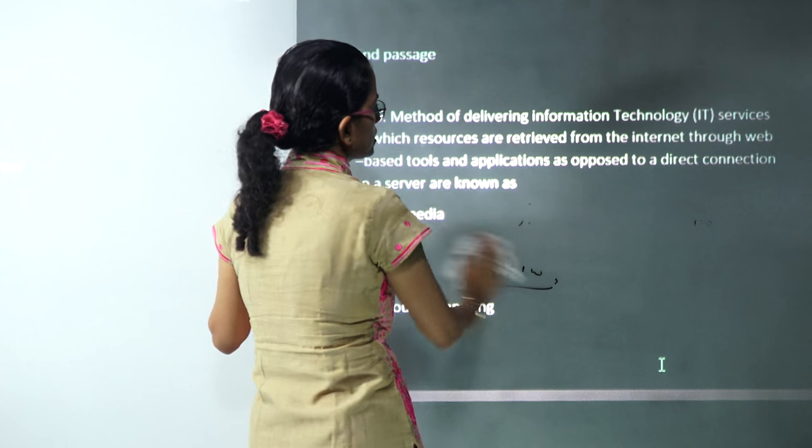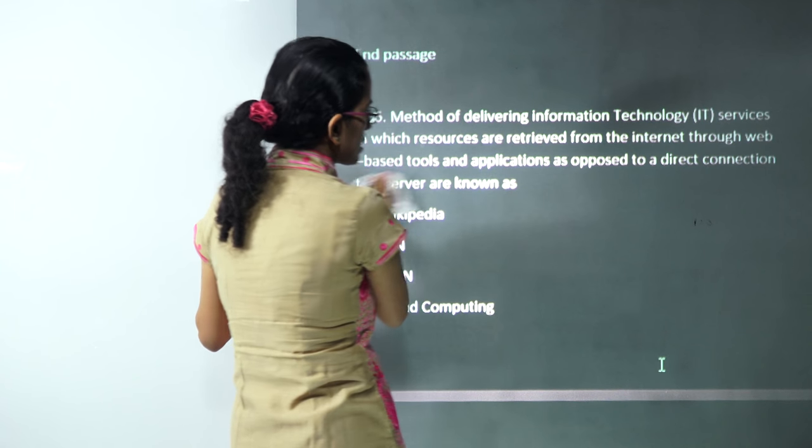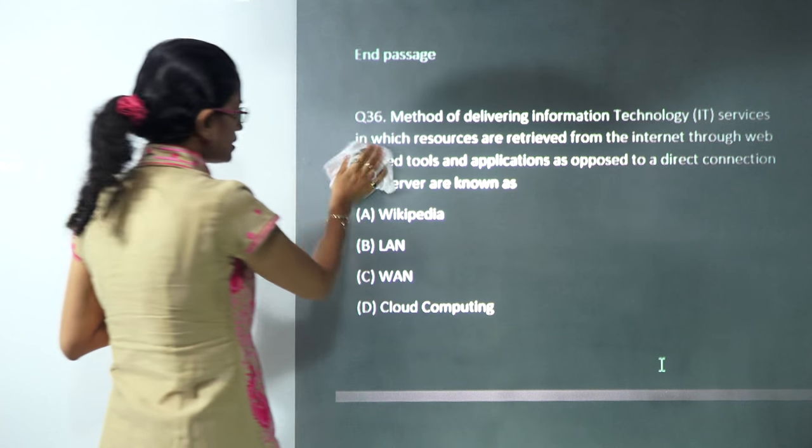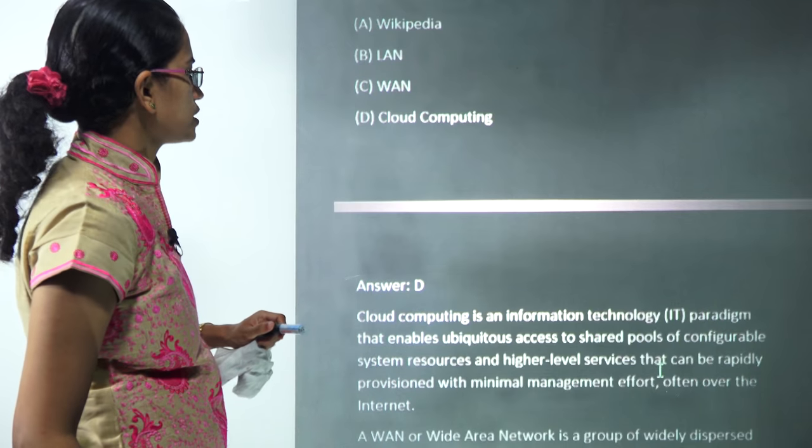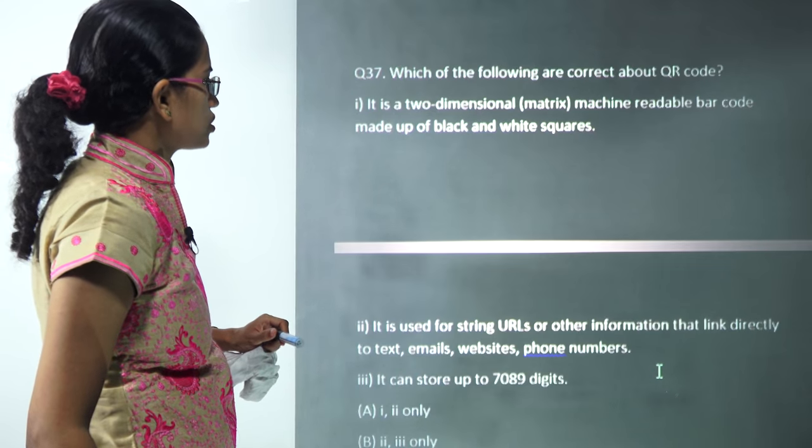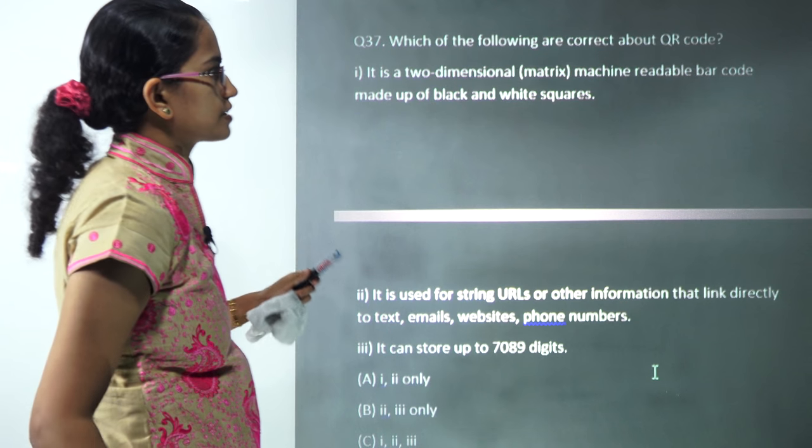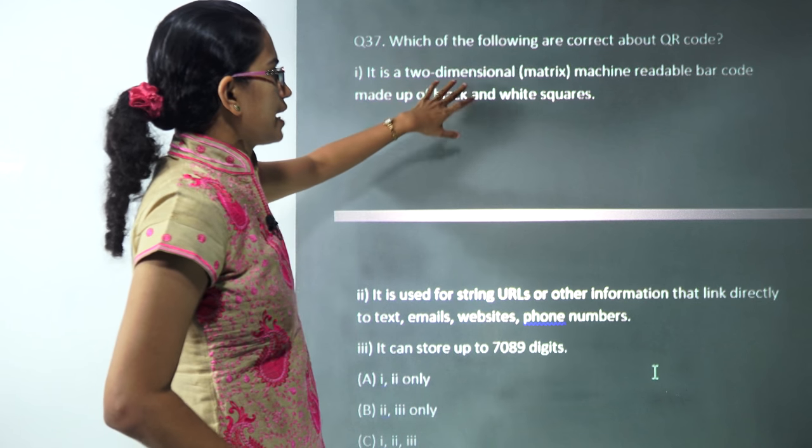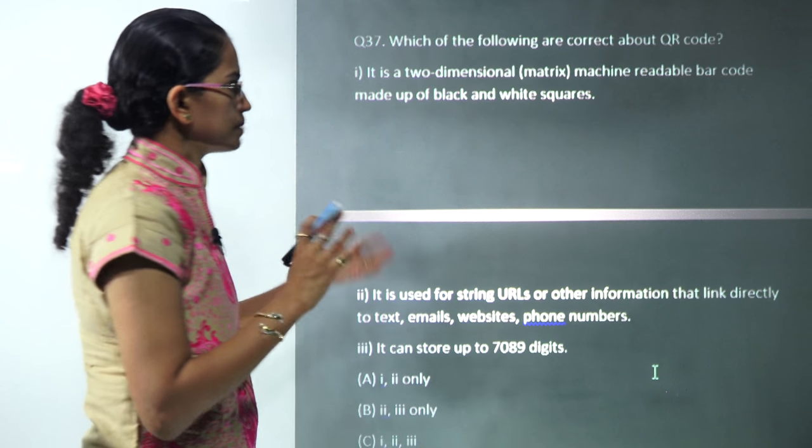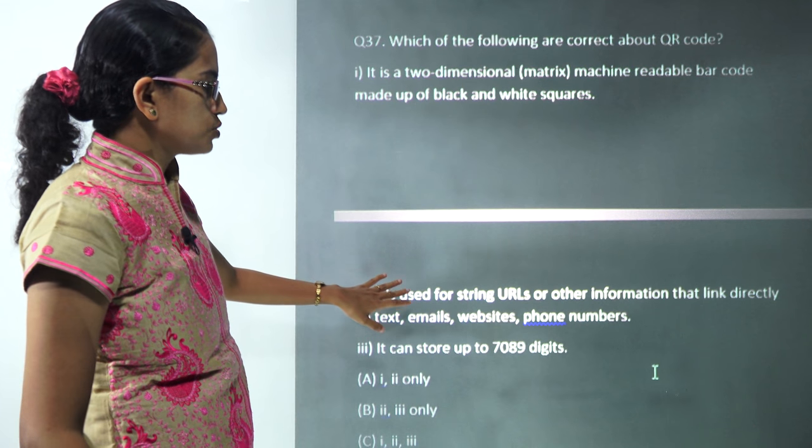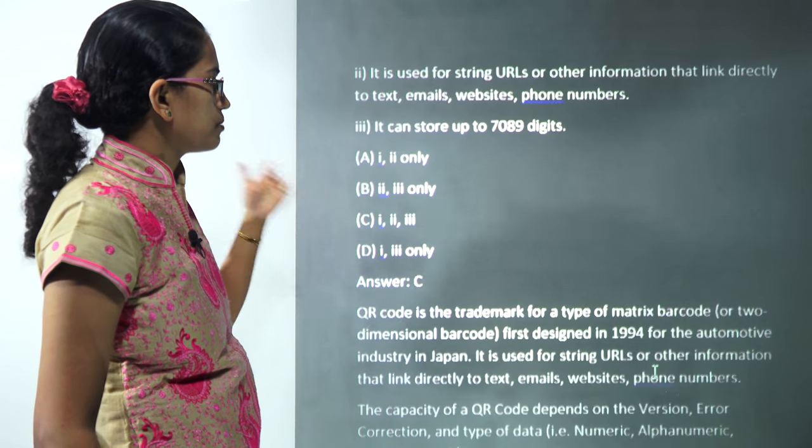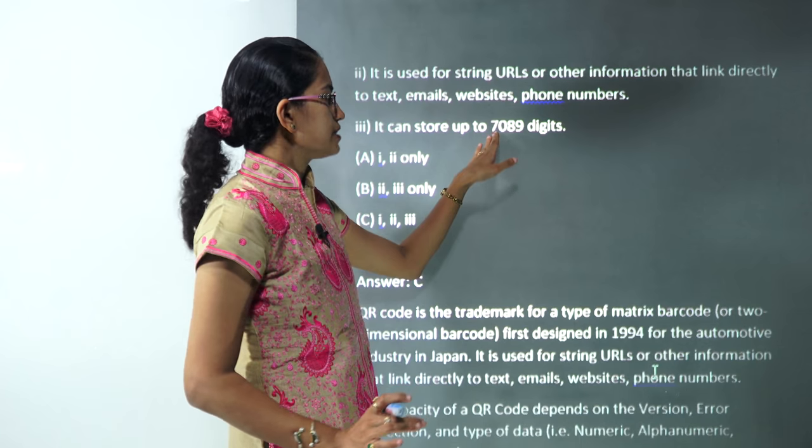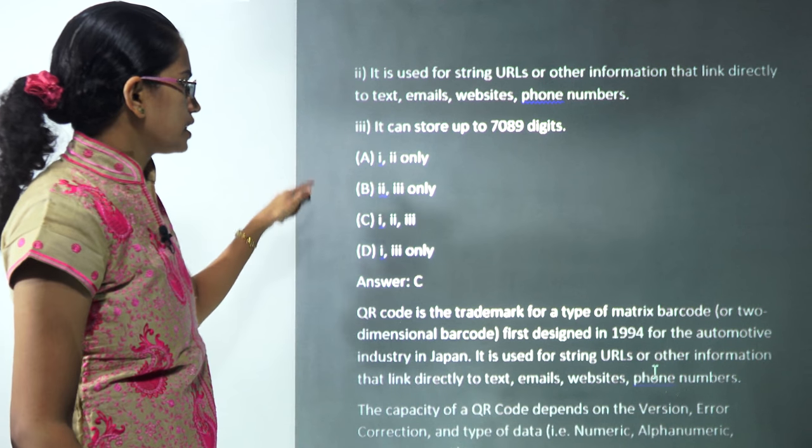The next question: if you are trying to deliver information through sources which could be retrieved from internet through web-based tools without a direct connection, it was known as cloud computing. A very direct question. The next question is on QR code, a very expected question we talked about in previous doubt solving lectures for NET.